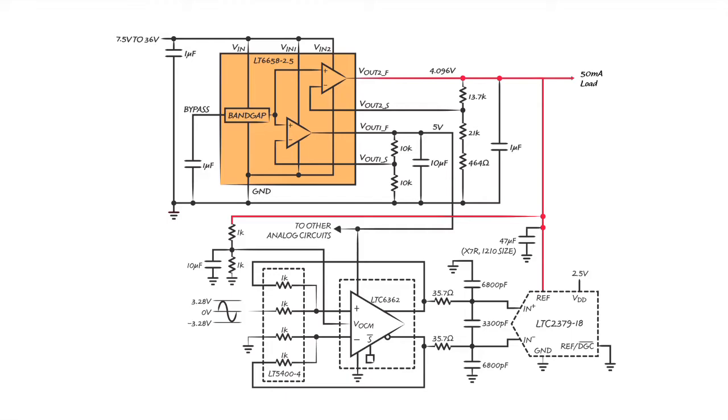In this application, the 50 milliamp output is used to drive the reference input of a high-resolution SAR converter and set up the common mode of an op amp. The 150 milliamp output is used to power an op amp and other analog circuits. Because the outputs of the LT6658 are buffered separately and they have excellent load regulation, multiple loads operate with little or no effect on the adjacent output.